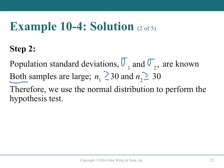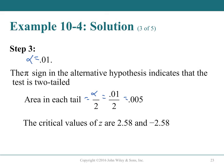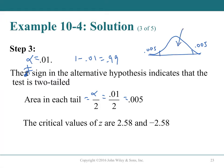For α = 0.01 two-tailed, α/2 = 0.005 in each tail, giving critical values z = ±2.58—equivalent to a 99% confidence interval. This should look familiar: 1 - 0.01 = 0.99, same as the 99% CI z-values.